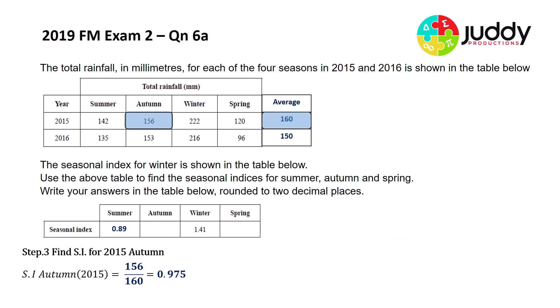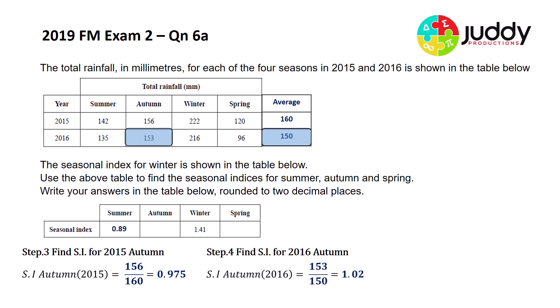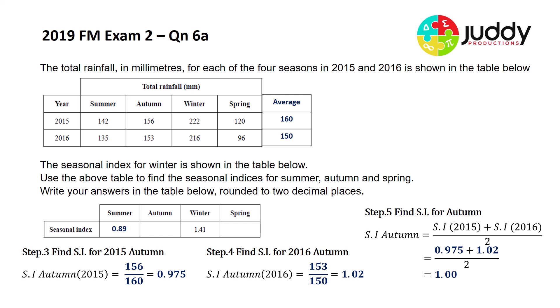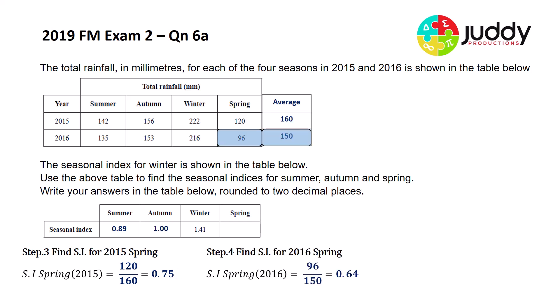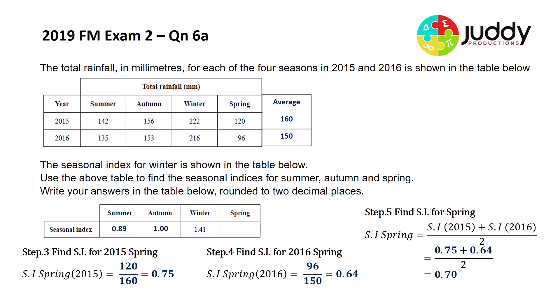For autumn: the 2015 rainfall of 156 mm divided by the average of 160 gives 0.975; repeating for 2016 gives 1.02. Averaging those two gives an overall seasonal index for autumn of 1.00 to two decimal places. For spring: the 2015 seasonal index is 0.75 and for 2016 it is 0.64. Averaging those two gives a seasonal index for spring of 0.70 rounded to two decimal places. That's the answer for 6a.